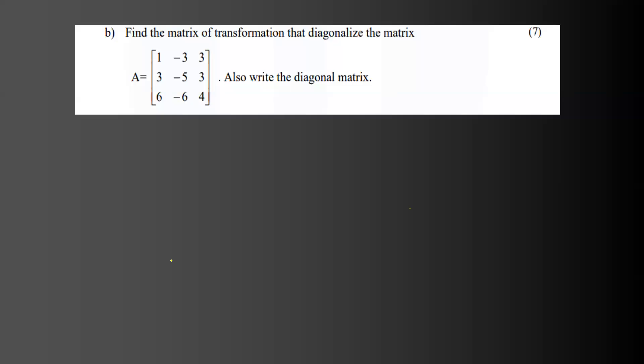Find the matrix of transformation that diagonalizes the matrix A equal to [[1, -3, 3], [3, -5, 3], [6, -6, 4]]. Also write the diagonal matrix.